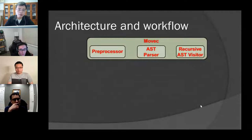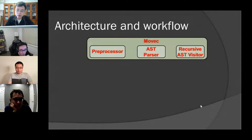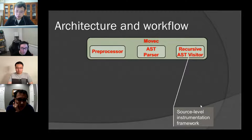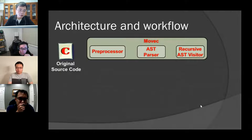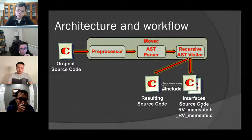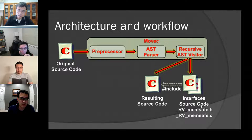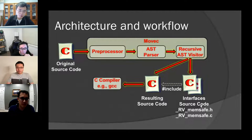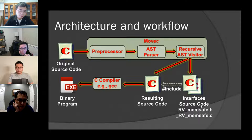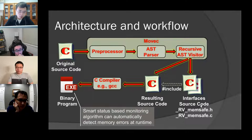When the program tries to dereference the pointer with an array subscript expression that is outside the legitimate range, an error is detected and reported at runtime. The most critical structures of this approach are the metadata and the status node. Movic can detect spatial errors using bound information checks, temporal errors and type confusion errors using status feature checks, and memory leaks using reference count checks. The architecture includes a preprocessor, an AST parser, and a recursive AST visitor implementing the source-level instrumentation framework.